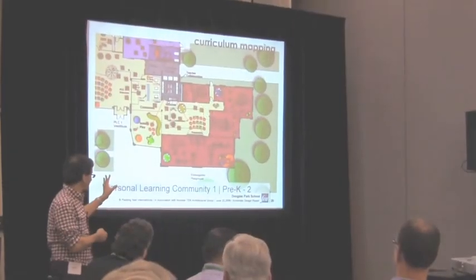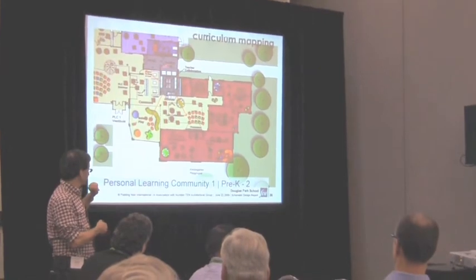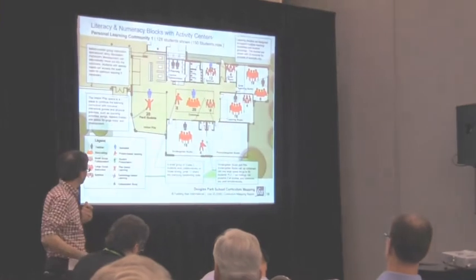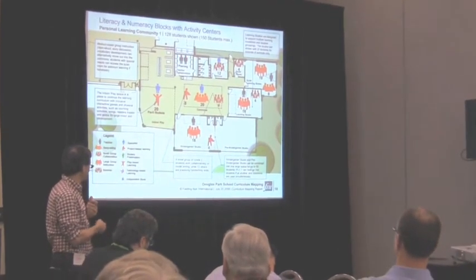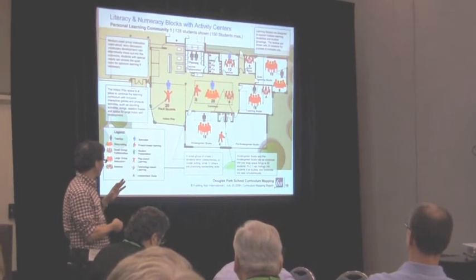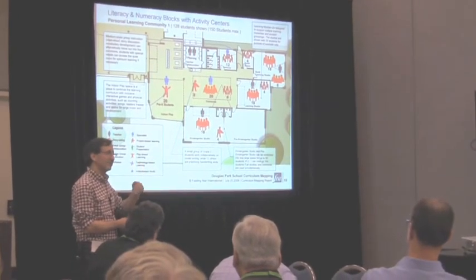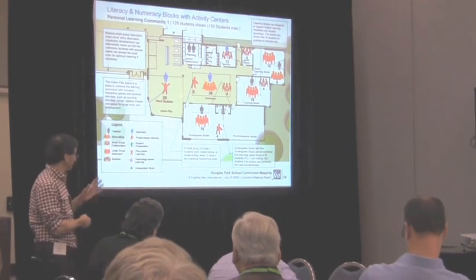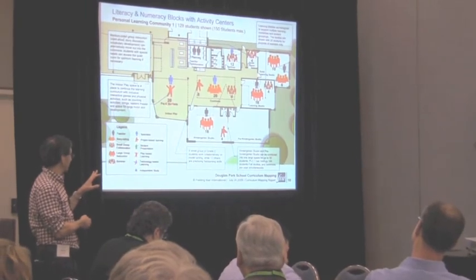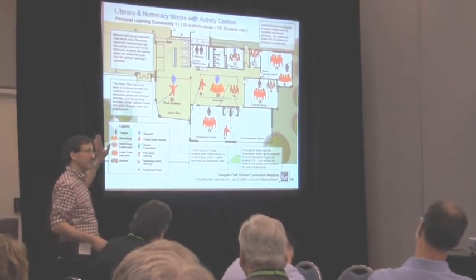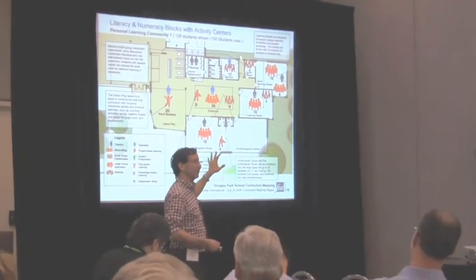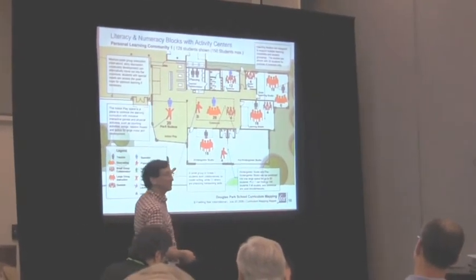For curriculum mapping on this project, we take a larger detailed plan with furnishings so that staff can really have a sense of how it's used and the scale of that. Then we take various icons and work together in teams, identifying with numbers where we're teaching and learning in different parts of the building. For example, this is early childhood, and we've identified there could be 20 pre-K students here. If you choose Douglas Park School, you'll want to account for 125 students in this space.